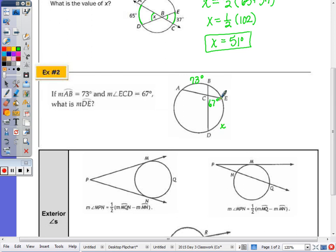DE is the arc intercepted by this angle, and the vertical angle intercepts arc AB. I know that the angle is equal to half the sum of the arcs. The angle of 67 degrees is equal to one half the sum of X and 73.